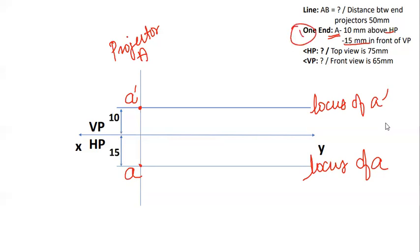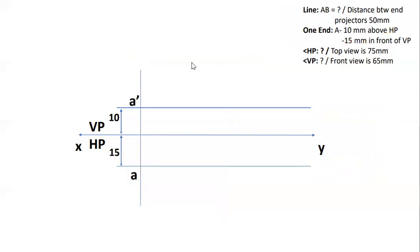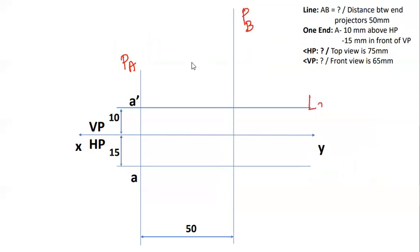What does the second data mean? The length of the line is the second data. This means the distance between projectors is 50mm — that is the second data. The projector for B is drawn such that Projector A and Projector B are 50mm apart. This is the Locus of A' and the Locus of A. After that, one end — the distance between the projectors — is set. The top view and the front view placement is done.